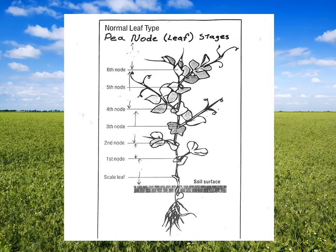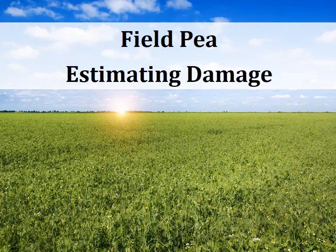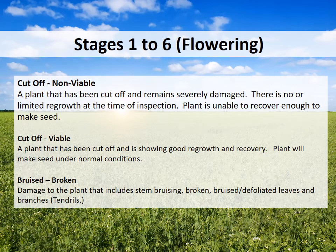Here you can see the different leaf stages of the pea plant. All fields that are hailed on in stages one to six must have counts completed on 25 plants in a row. Stage seven, potted, and stage eight, in the swath, are a ten-plant count. Using 25 plants in a row, determine the number of plants that are completely cut off and non-viable — that is, a plant that has been cut off and remains severely damaged, with no or limited regrowth at the time of inspection.